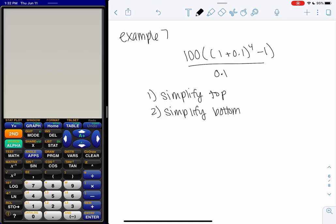In this case, I would argue that the bottom is already simplified because it's only a single number, right? So we really only have to simplify the top.